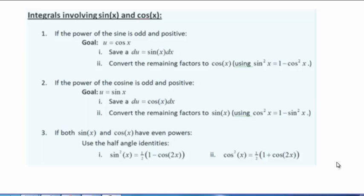First, we look at the power of sine. If it's odd and positive, our goal is to use substitution u equals cosine of x. We want to save a du equals sine of x dx and convert the remaining factors to cosine of x using the Pythagorean identity sine squared of x equals one minus cosine squared of x.